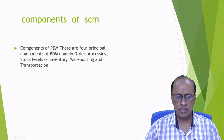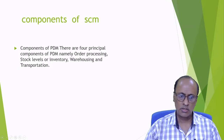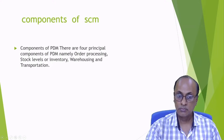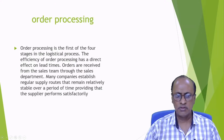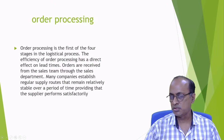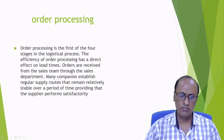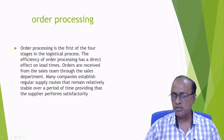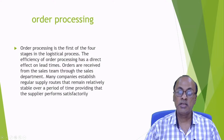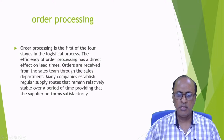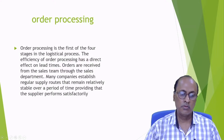There are four principal components of PDM: order processing, stock levels or inventory, warehousing, and transportation. Order processing is the first of the four stages in the logistics process. The efficiency of order processing has a direct impact on lead time. Orders are received from the sales team through the sales department, and many companies establish regular supply routes that remain relatively stable over a period of time.